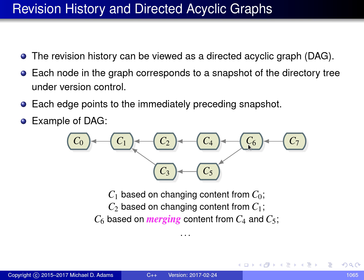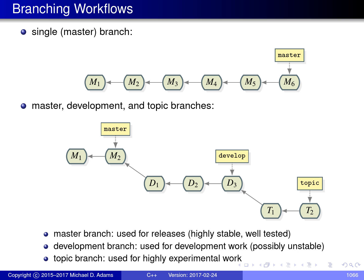C6 is interesting — it's what we call a merge commit. It was produced by making changes to both C4 and C5 and then merging them together. C7 is then produced by making changes to C6. If we think of the revision history as a directed acyclic graph, there are many possible ways to derive new commits from old ones, and different choices lead to different branching workflows.